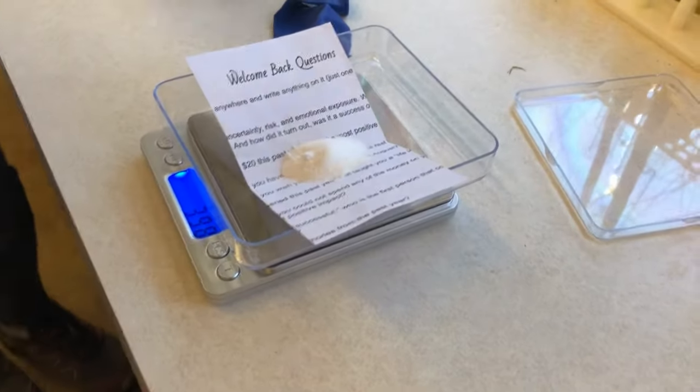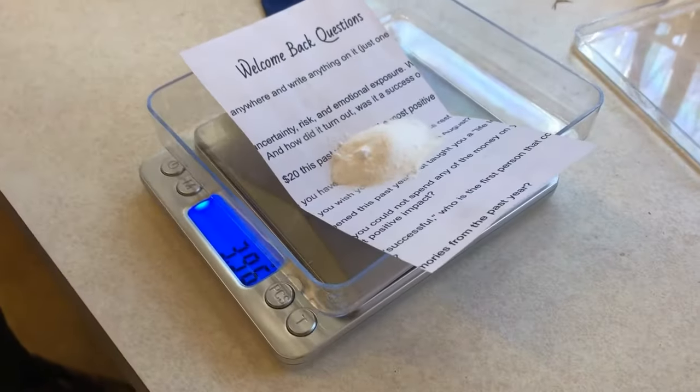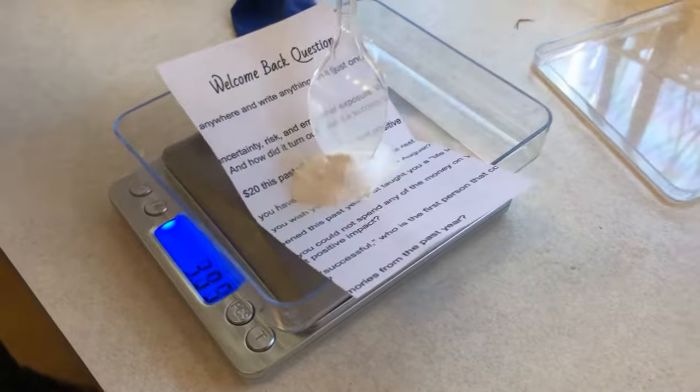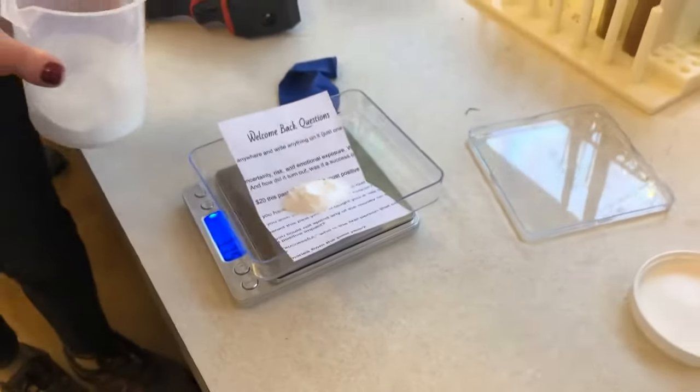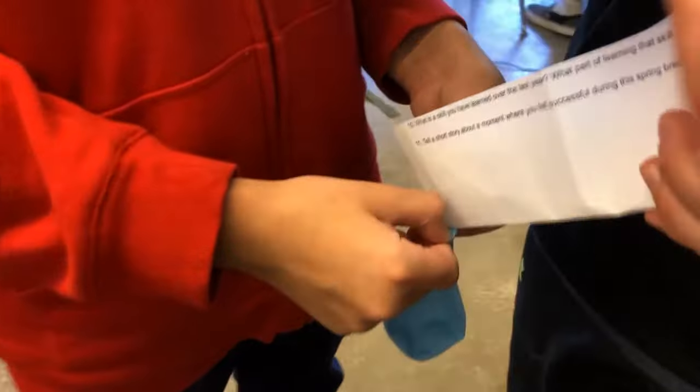They use this piece of paper to measure out 3.0 grams of baking soda. You can see the scale adjusted just a little bit so they can get that 3.0 grams. Then they use that paper to transfer the baking soda into the balloon.